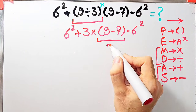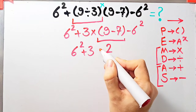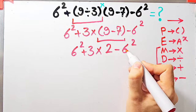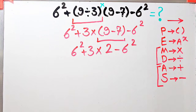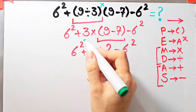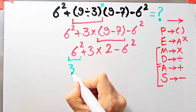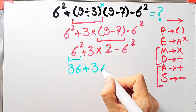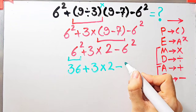Now the question is 6² plus 3 times 2 then minus 6². We have exponents, addition, multiplication, and subtraction. First we simplify the exponents: 6² equals 36. Now we have 36 plus 3 times 2 then minus 36.